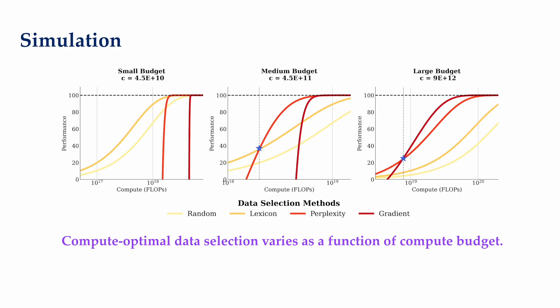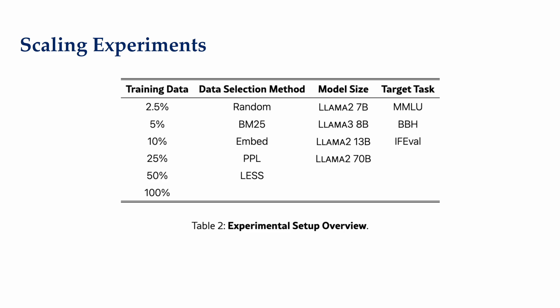If we fix the data selection model to be the smallest from any given LLM family, our simulation suggests that the compute optimal data selection method changes as a function of the compute budget and the performance rates associated with each method that is our lambda.